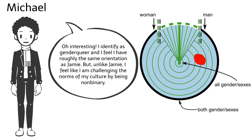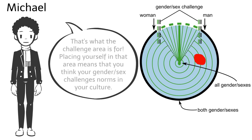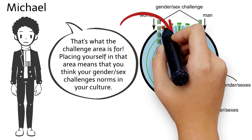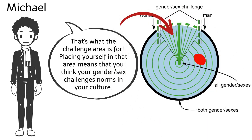Oh, interesting. I identify as genderqueer and I feel I have roughly the same orientation as Jamie. But unlike Jamie, I feel like I am challenging the norms of my culture by being non-binary. That's what the challenge area is for. Placing yourself in that area means that you think your gender sex challenges norms in your culture.